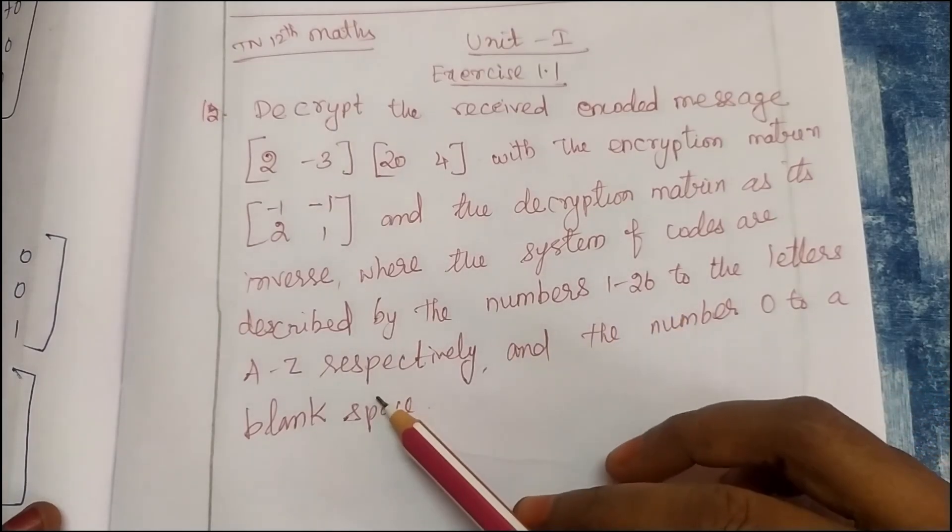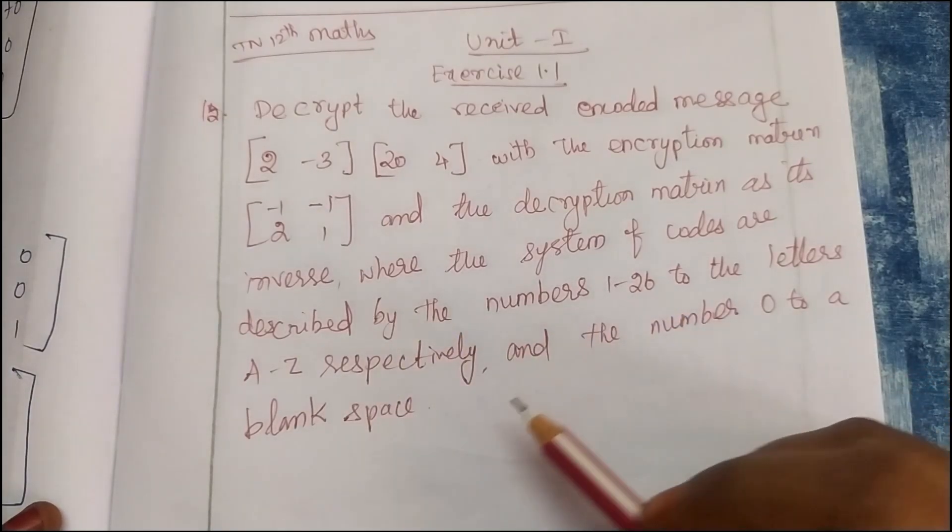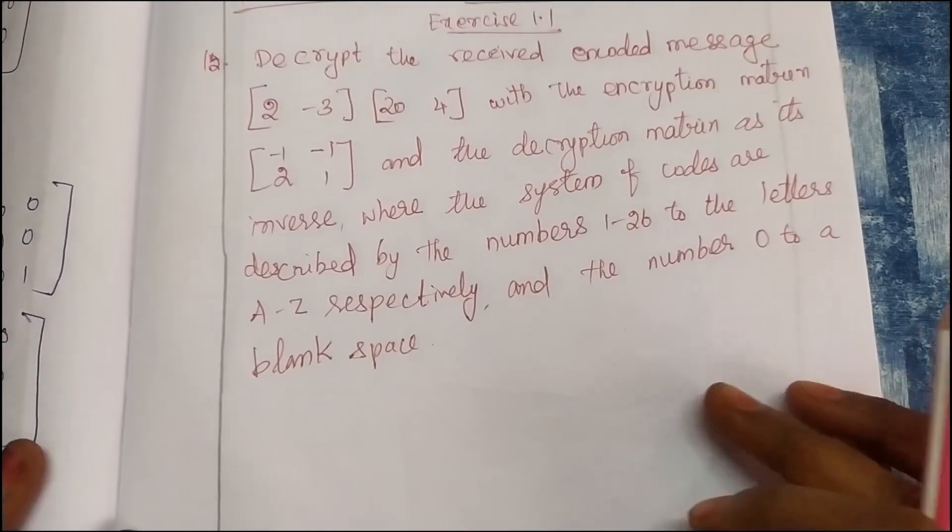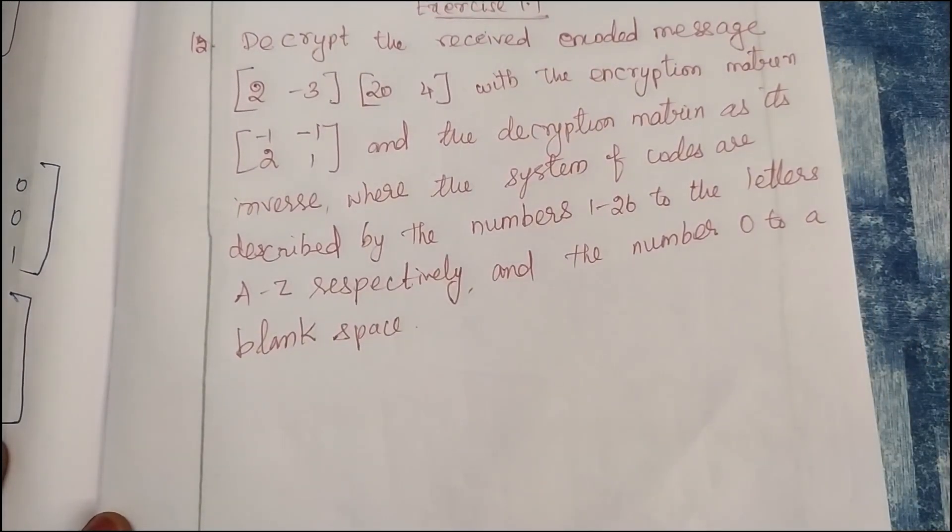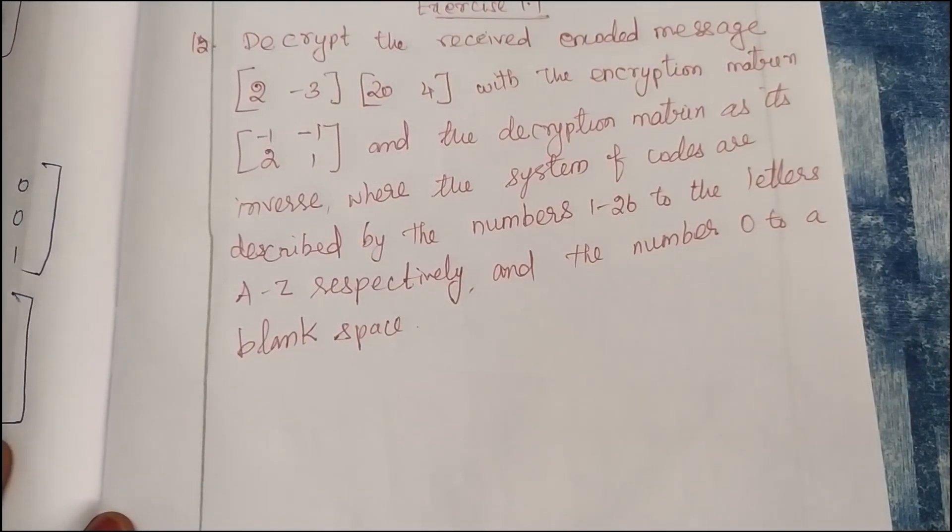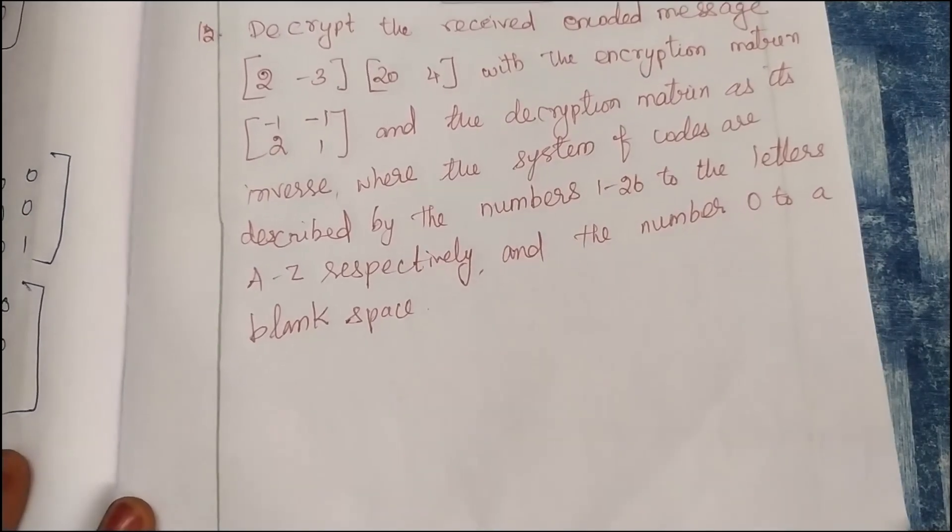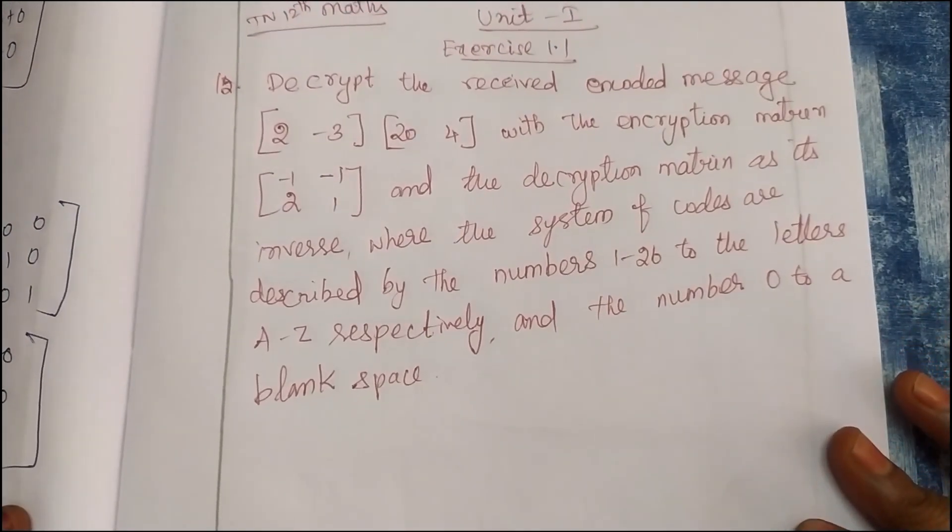A to Z is 1 to 26 numbers, and the number 0 is blank space. So 1 to 26 is A to Z. So first, the encoder matrix is what we can do.